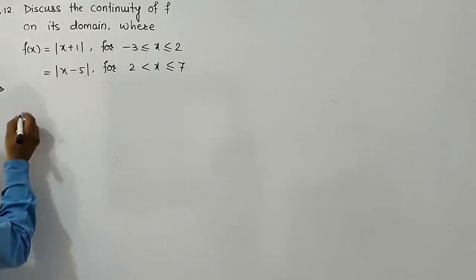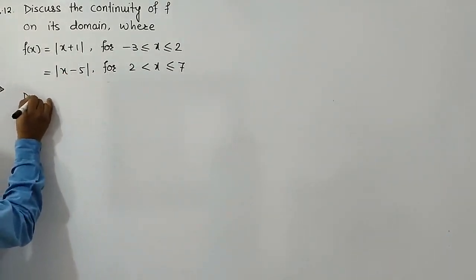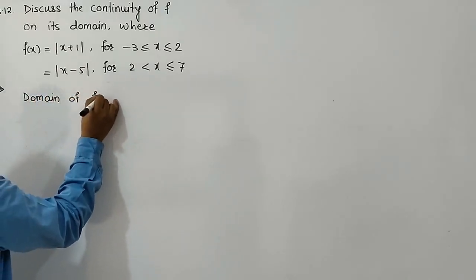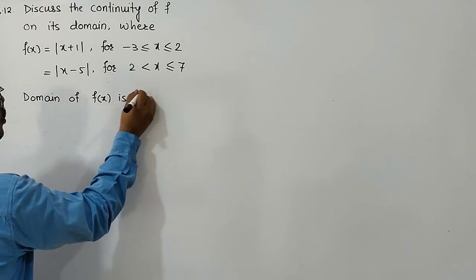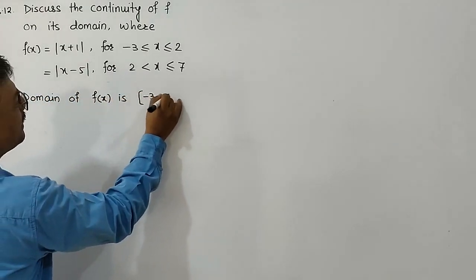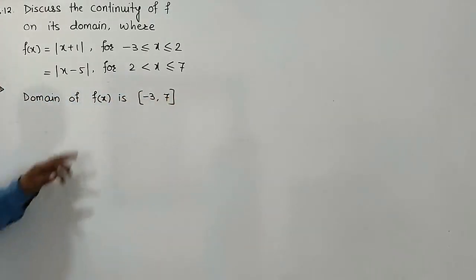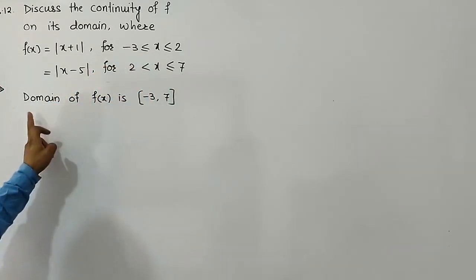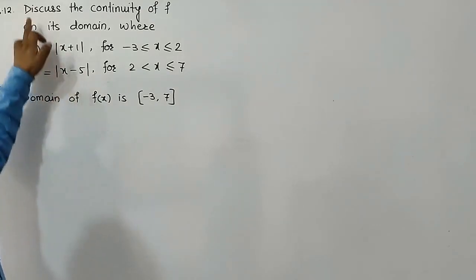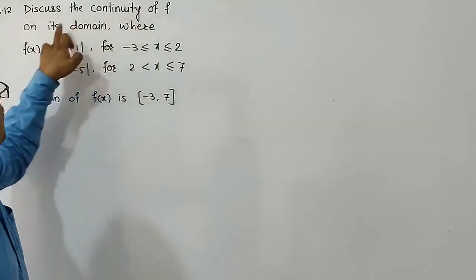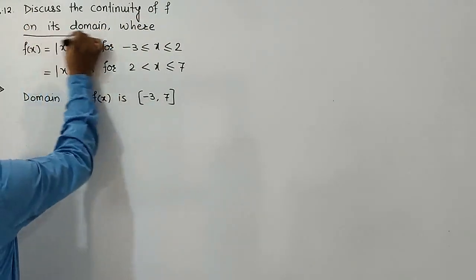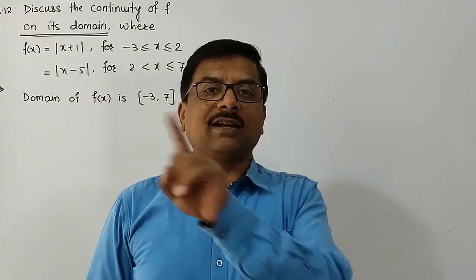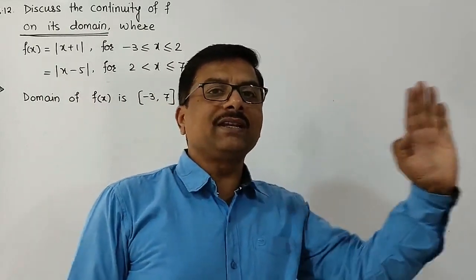The domain of the function is the closed interval [-3, 7]. This is the domain of the function. Here we want to discuss the continuity of the function on its entire domain. Till now we have only discussed continuity at one point, but today we have the whole domain to discuss.